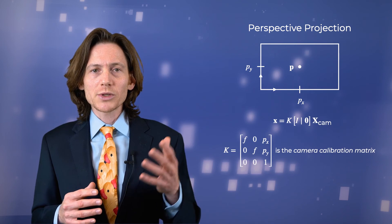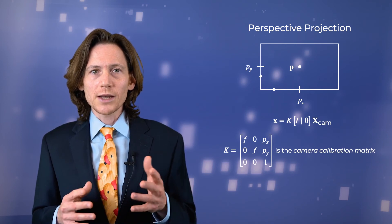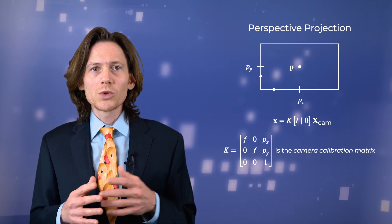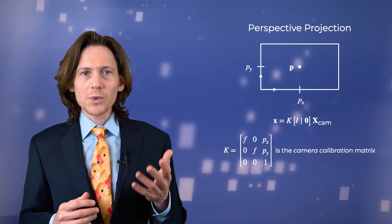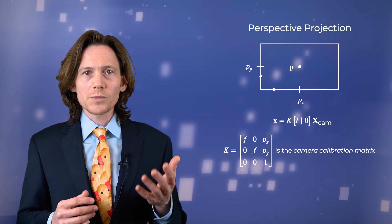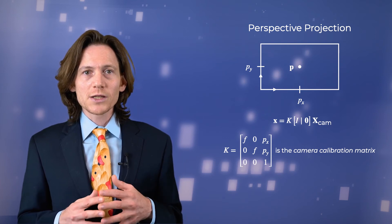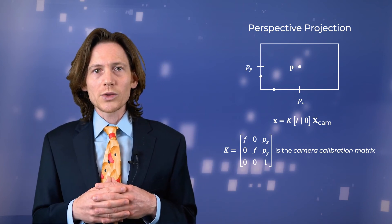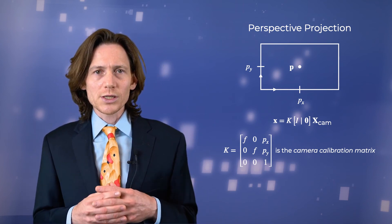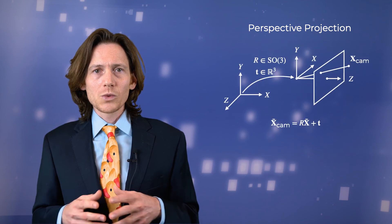This gives rise to a modified form of the camera projection matrix, where we can express this projection operation as a matrix k multiplied by a matrix that concatenates a 3 by 3 identity matrix with a 3-vector column of zeros. The matrix k is referred to as the camera calibration matrix or the intrinsic matrix.